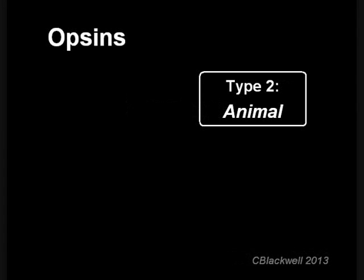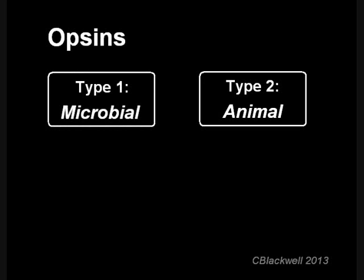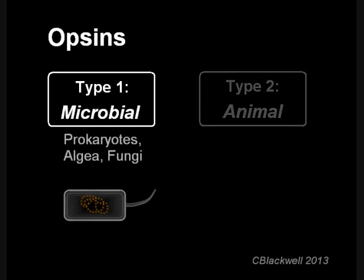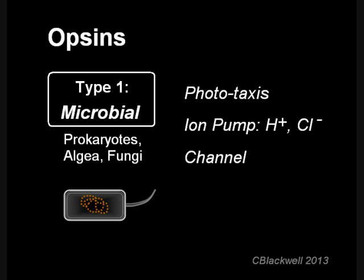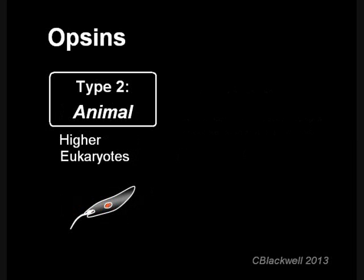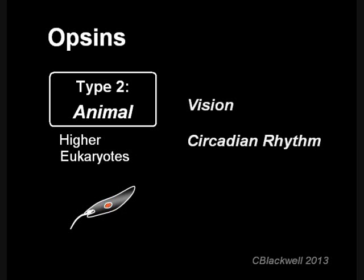The Opsins are found just about everywhere in the animal kingdom and have more than one function, so a little background is in order. The ones we have been talking about are classed as Type II Opsins, so you might guess there are also Type I Opsins. Type I Opsins occur in very simple one-celled organisms like bacteria and algae, so we are calling them microbial Opsins. In addition to light sensing, they can also act as ion pumps. Type II Opsins occur in eukaryotes and higher animals. They are mostly used for vision, with a small segment participating in circadian rhythms.